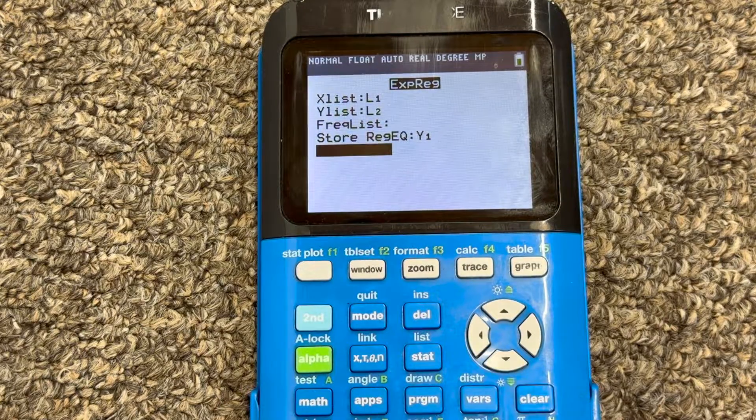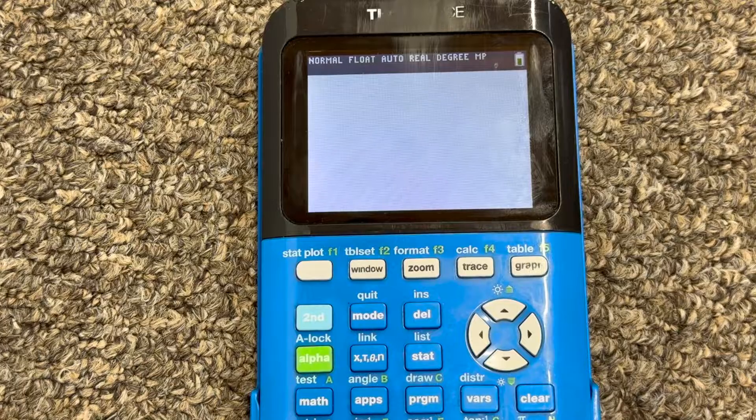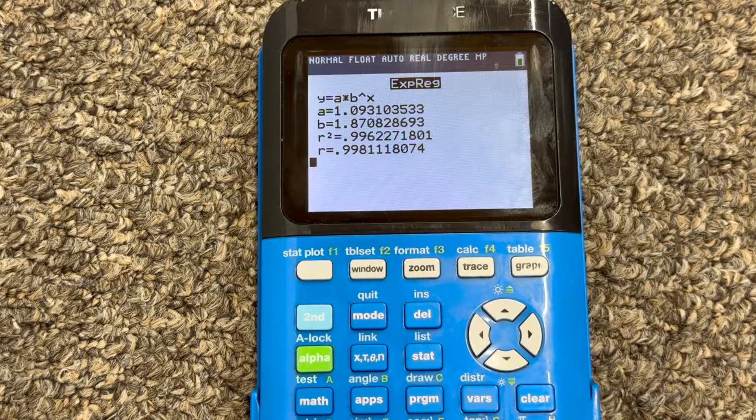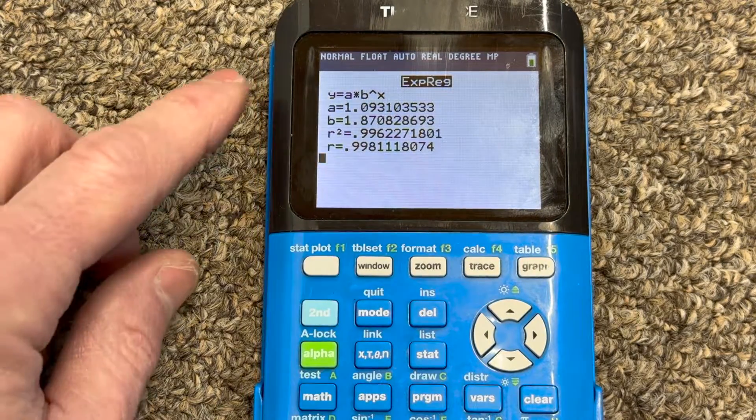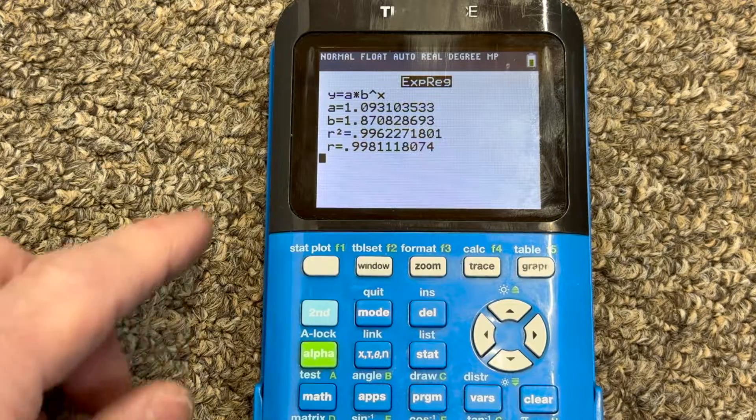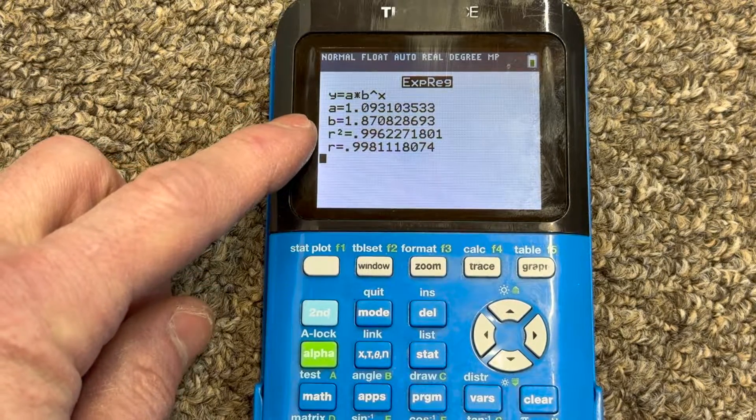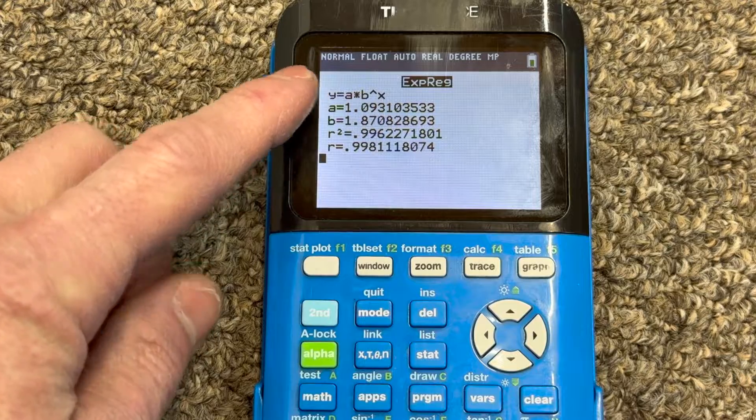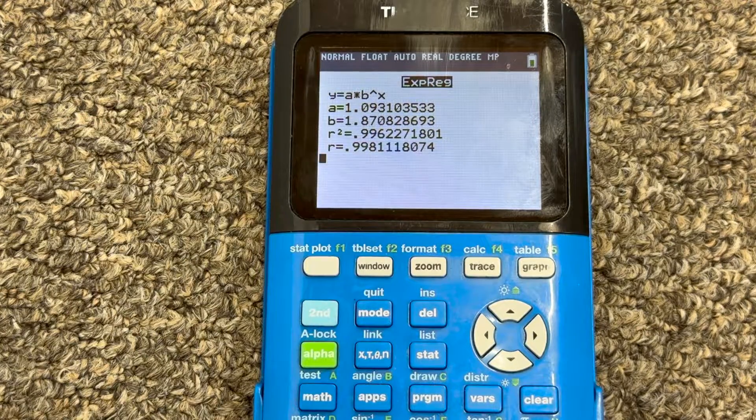And then if we arrow down to calculate and press enter, now you can see that it gives us the equation. You can see y equals a times b to the x power, and then tells us what our a value and our b value are. You can substitute those in and round if you want to get like an approximate answer.